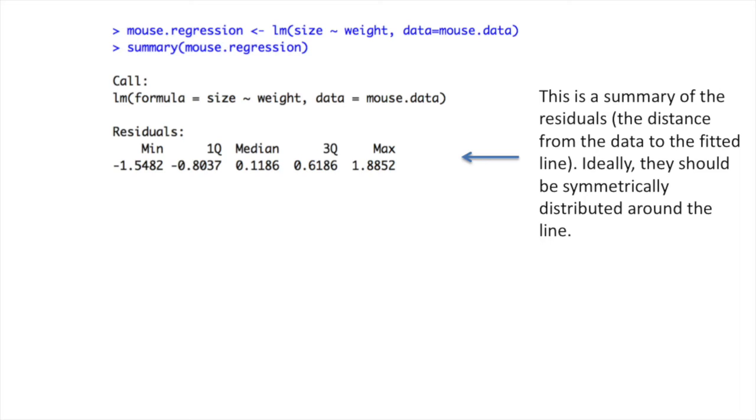After that, you get a summary of the residuals. Those are the distance from the data to the fitted line. Ideally, they should be symmetrically distributed about the line. That means you want the min value and the max value to be approximately the same distance from zero. Likewise, you'd like the first quantile, or 1Q, and the third quantile, or 3Q, to be equidistant from zero. Also, it's nice to have the median close to zero as well.